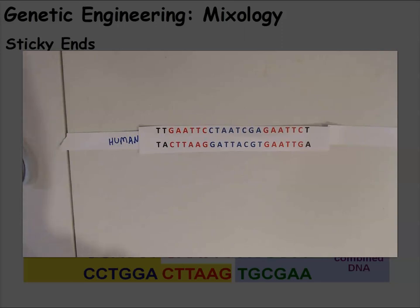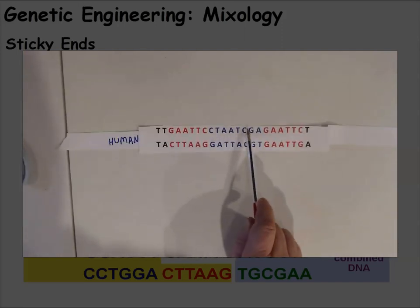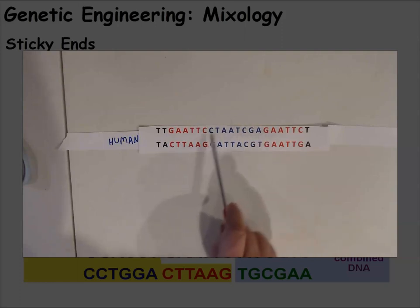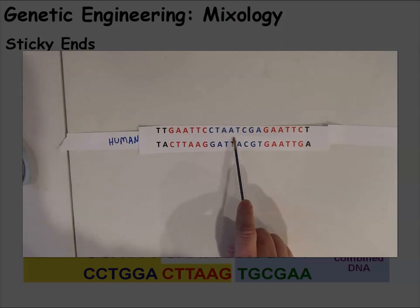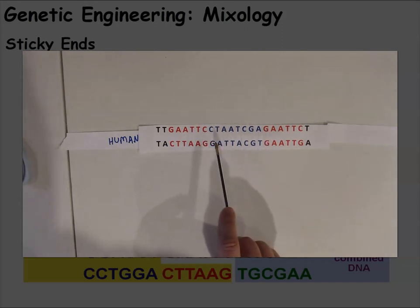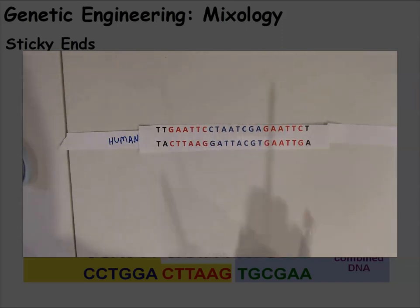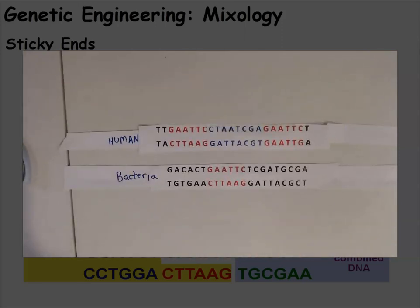Let me show you how this works with an example. Let's pretend this is part of human DNA, and this blue section right here is the gene for insulin. When it's expressed, it creates insulin. What we're going to do is cut this gene out using our restriction enzyme and then insert it into some bacterial DNA.